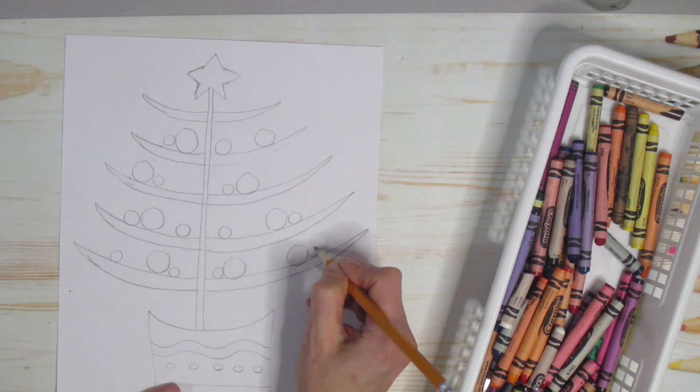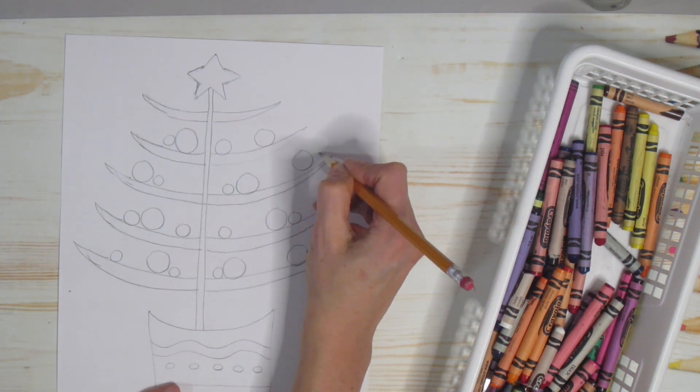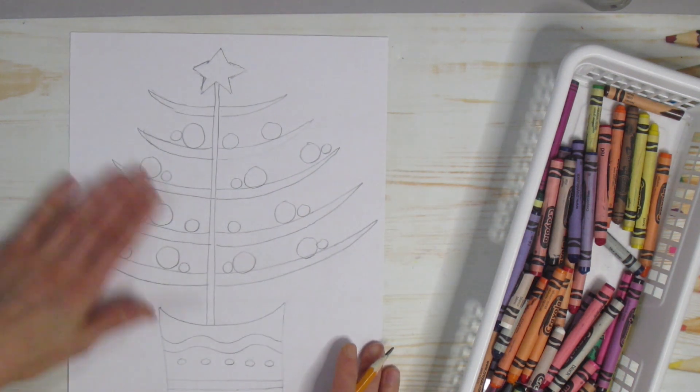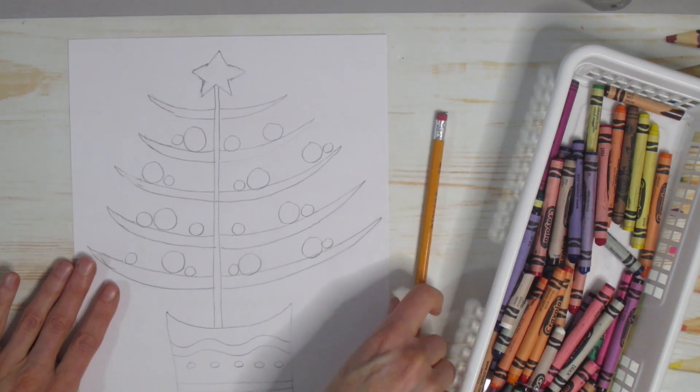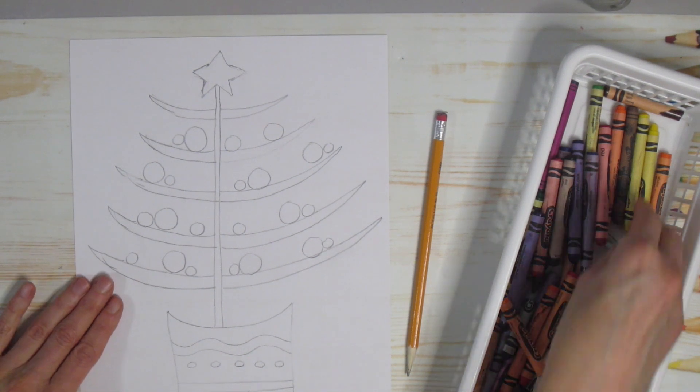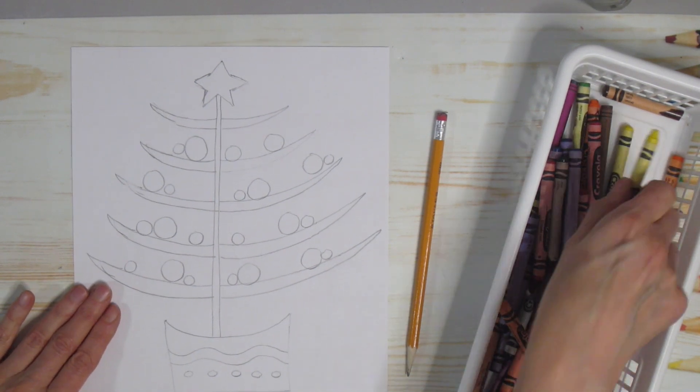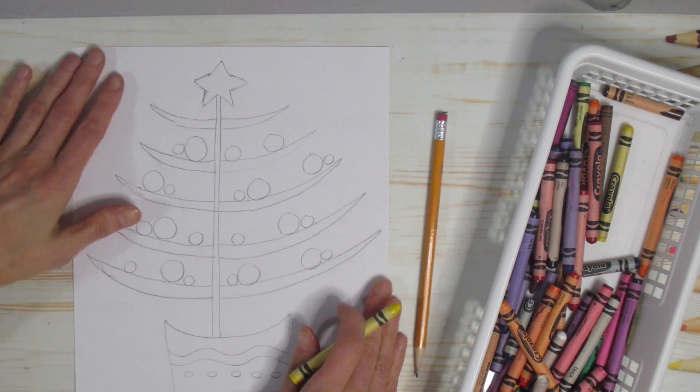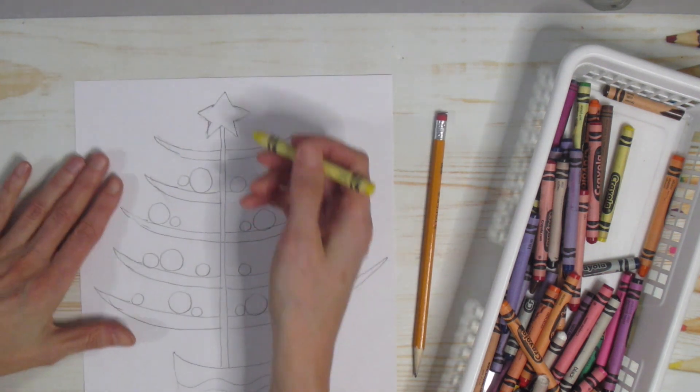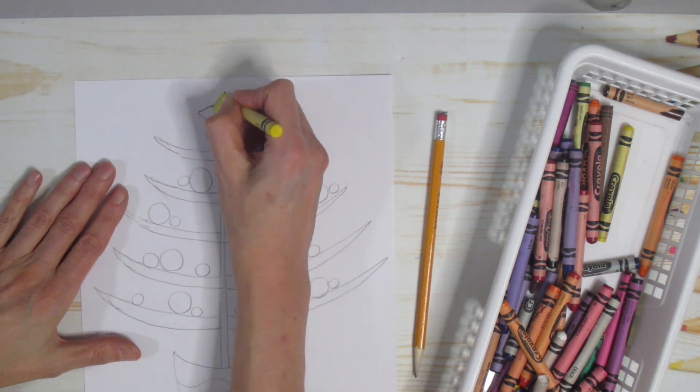And then the fun part comes, the coloring. So if you're using paint, go ahead. Markers, go ahead. I am using some crayons. And if you're using markers or paint, you can always erase the lines when you're done. Crayons are a little bit harder to do that.